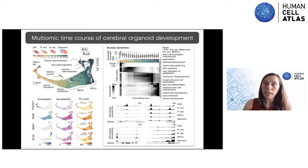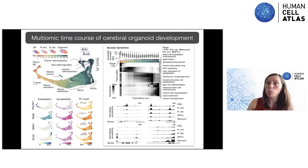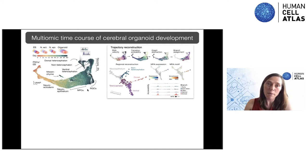Looking at the accessibility, early on in the pluripotent cells, accessibility is highest. As the cells move through development and start to restrict their fate and differentiate, accessibility becomes lower and lower. We can identify very specific regions of the genome that are accessible and acting as enhancers during different stages of development, including patterning, neuro-progenitor cell differentiation, and neuronal differentiation. Since we cover this time period of fate specification, we wanted to reconstruct trajectories and identify the bifurcations and fate decisions happening here.